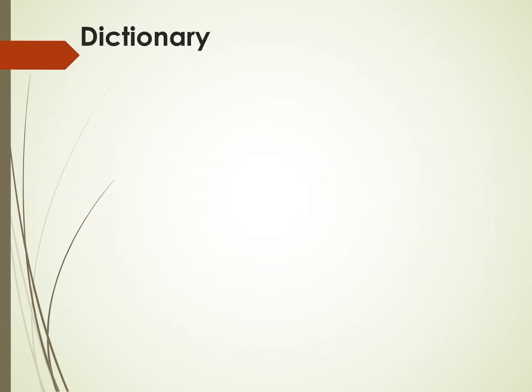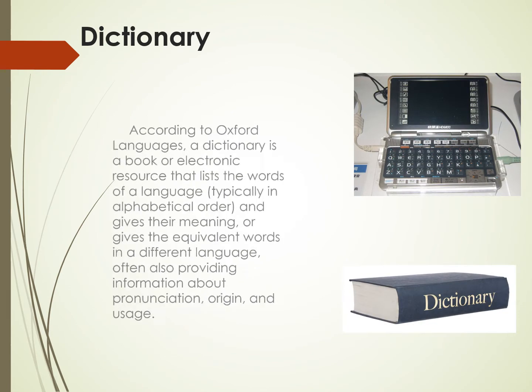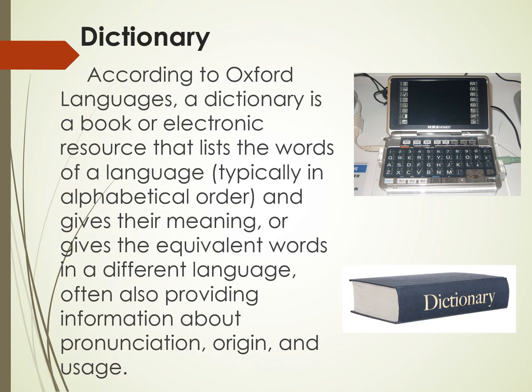What is a dictionary? According to Oxford Languages, a dictionary is a book or electronic resource that lists the words of a language, typically in alphabetical order, and gives their meaning or gives equivalent words in a different language, often also providing information about pronunciation, origin, and usage.